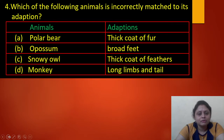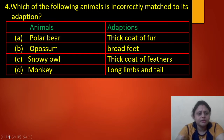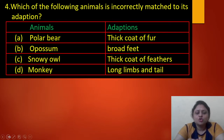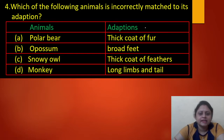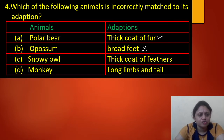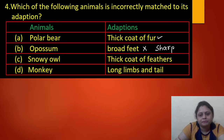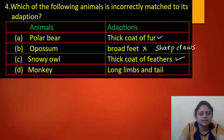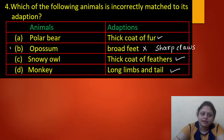Next question: which of the following animals is incorrectly matched to its adaptation? Polar bear — thick coat of fur. Opossum — broad feet. Snowy owl — thick coat of feathers. Monkey — long limbs and tail. Polar bear with thick coat of fur is correct for surviving cold. Snowy owl with thick coat of feathers is correct. Monkey with long limbs and tail is correct. But opossum with broad feet is incorrect — it actually has sharp claws, not broad feet. So the incorrect match is option B — opossum and broad feet.